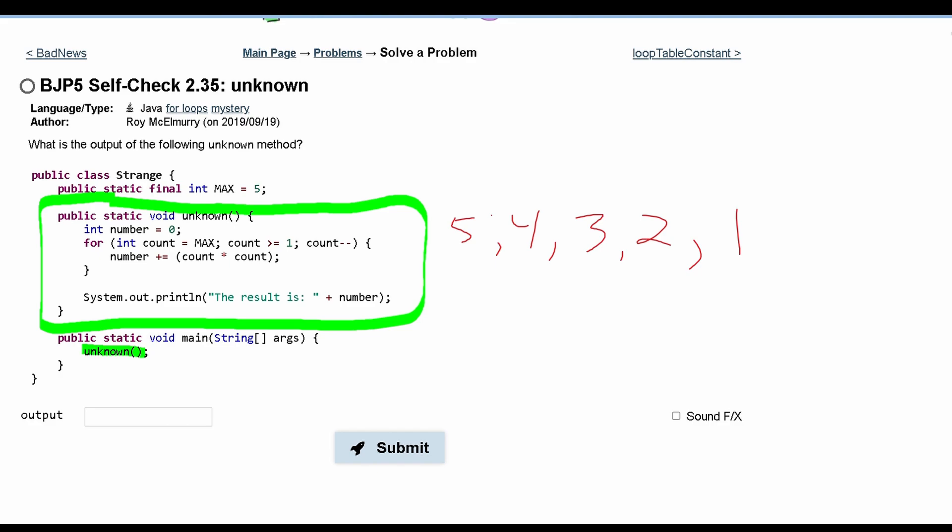we have that our number plus equals count times count. So for the first iteration of this loop, count is equal to 5. Now count is going to be 5 times 5, which is 25, plus number. Number is 0. So now for 5, right here, number, we'll just write it as n, is equal to 25 plus 0, or 25.